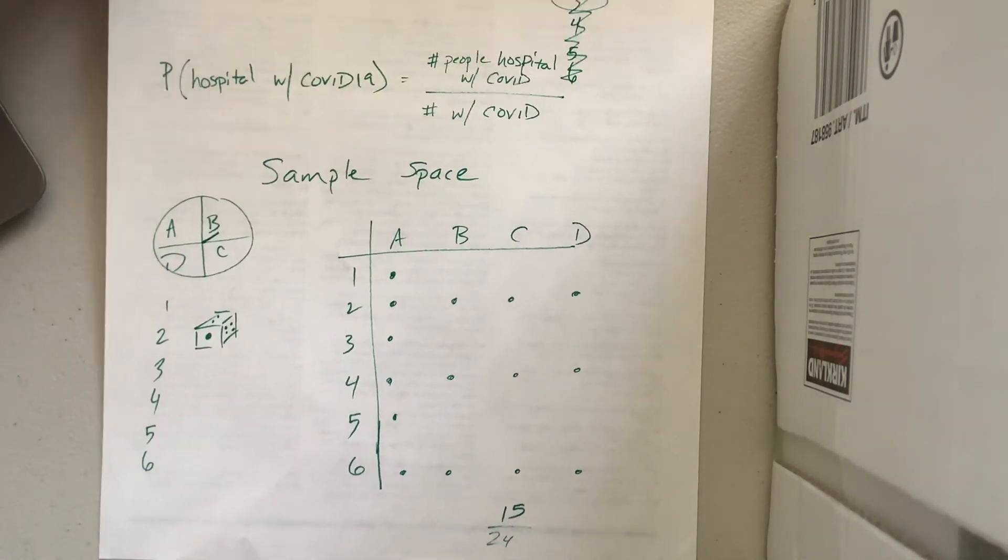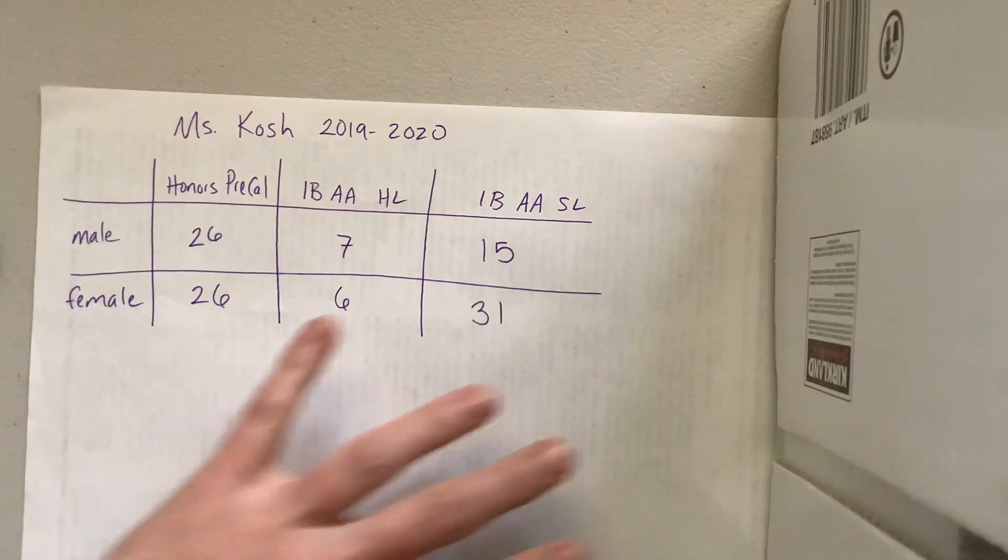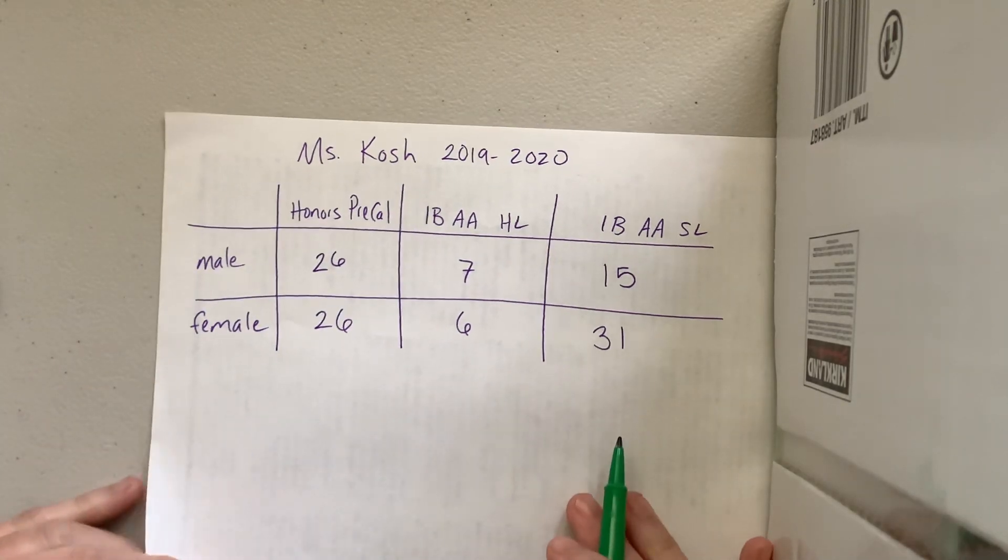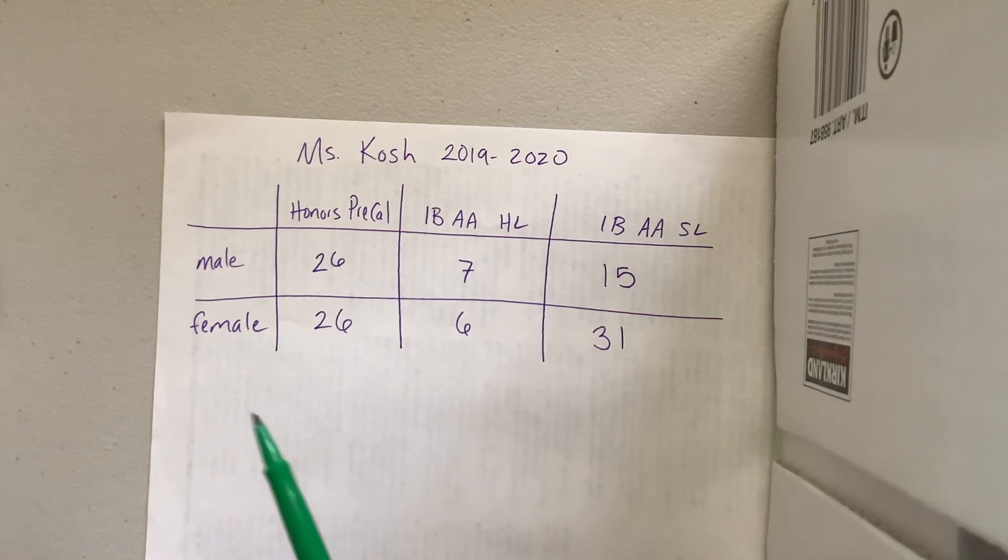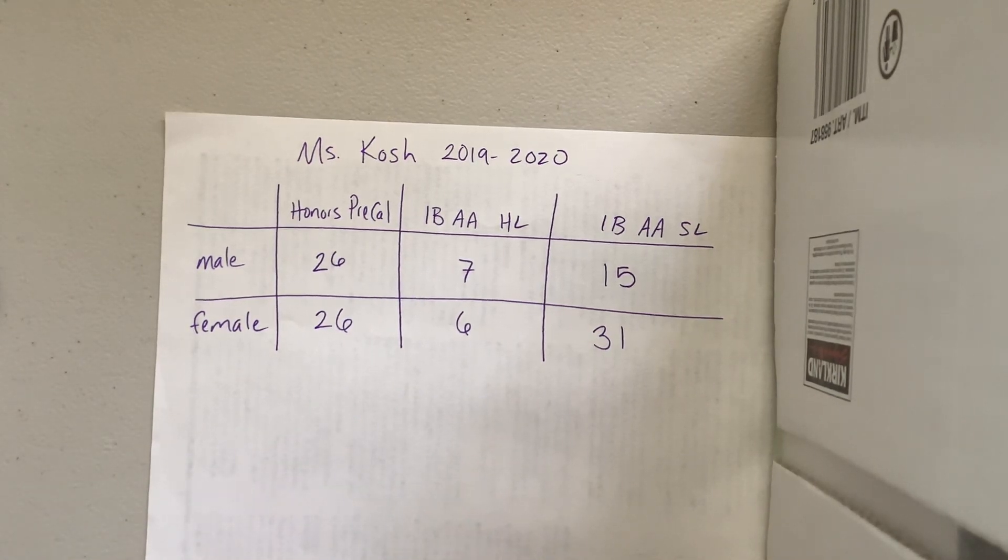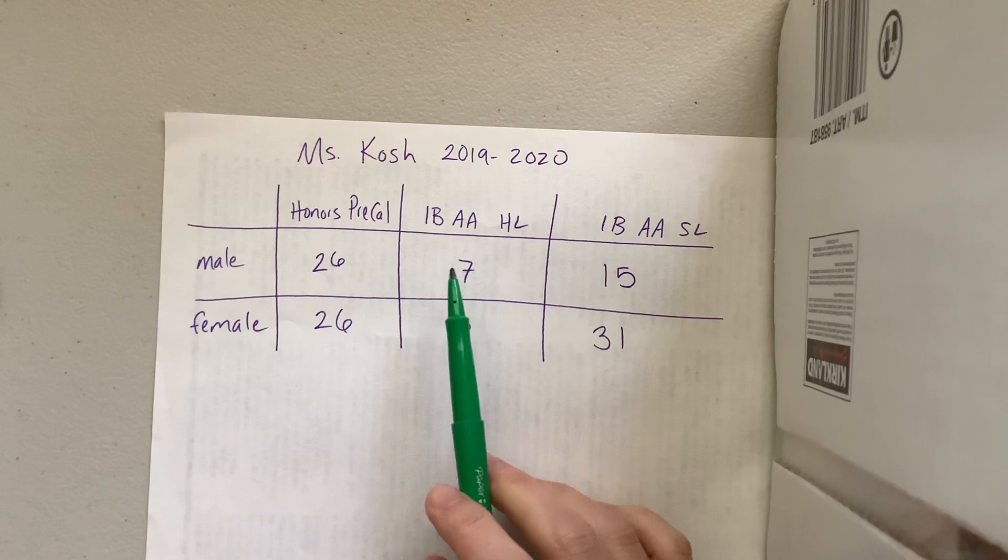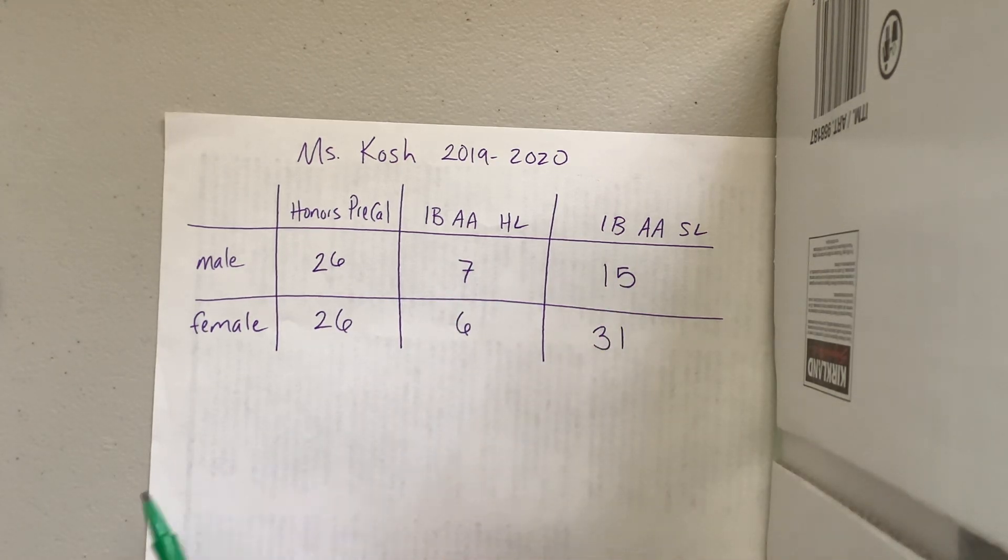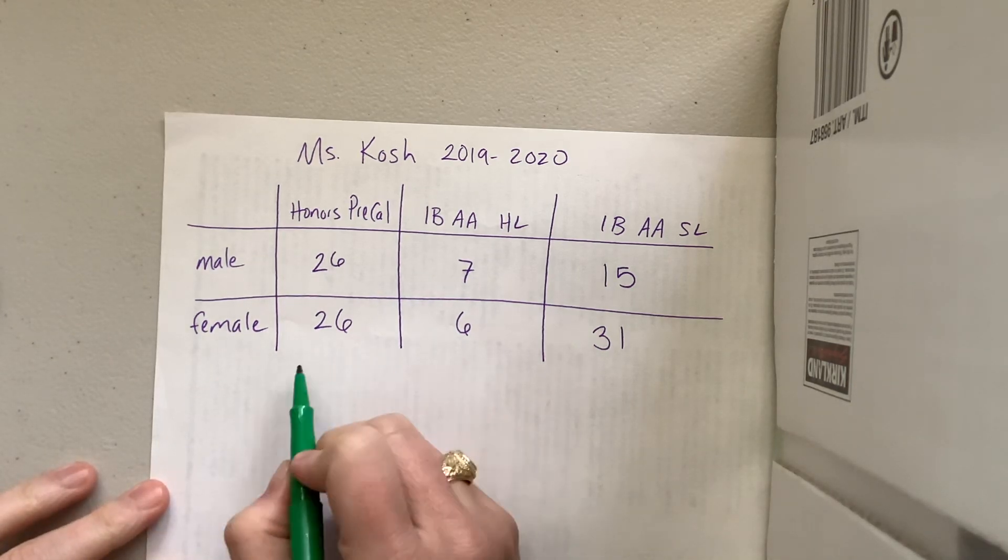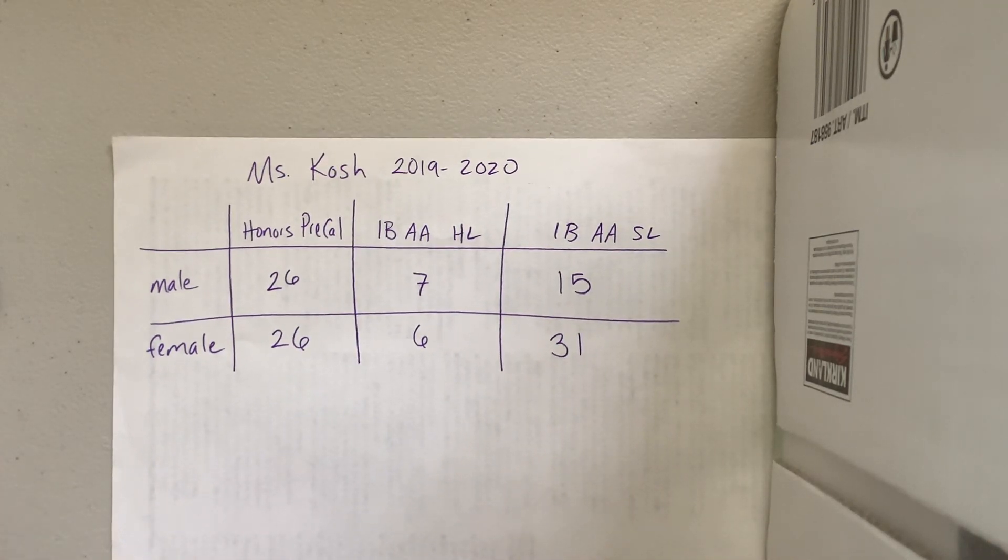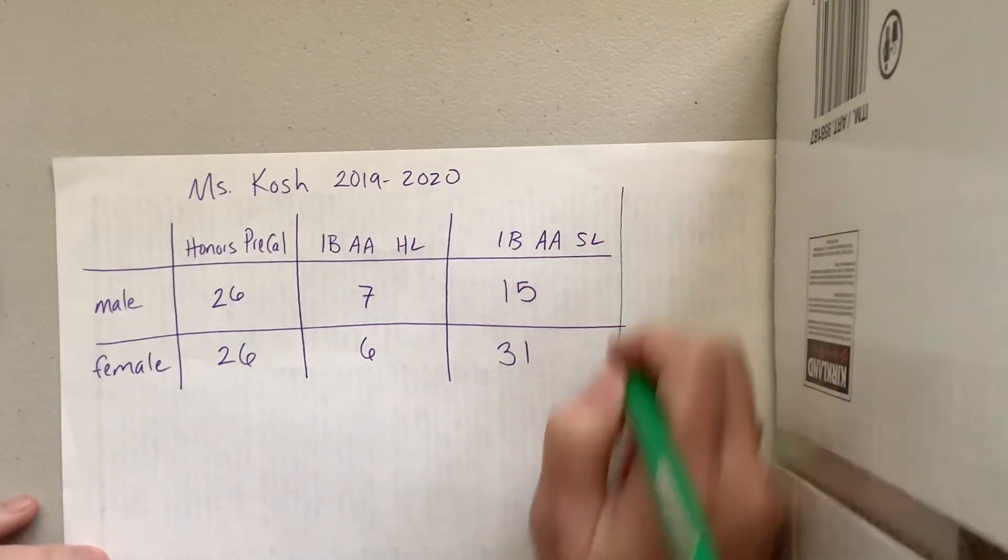Another thing that we're going to look at as we begin with probability is probability from a chart. So what I did, because I miss you guys, I made a chart of my current classes. I haven't thought about how many males and females I have in different classes, but this is it, this is what I figured out. So I teach three different courses. I teach honors pre-cal, I teach IB analysis and approaches HL, and I teach IB analysis and approaches SL.